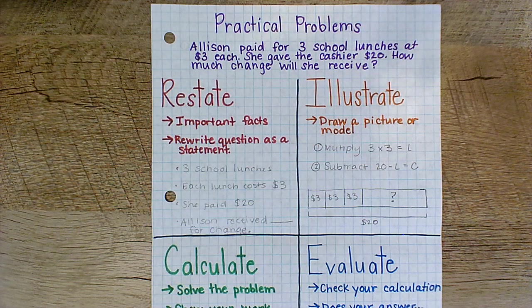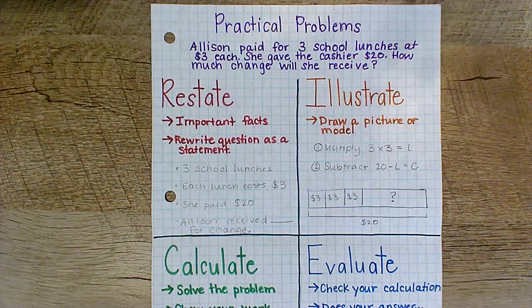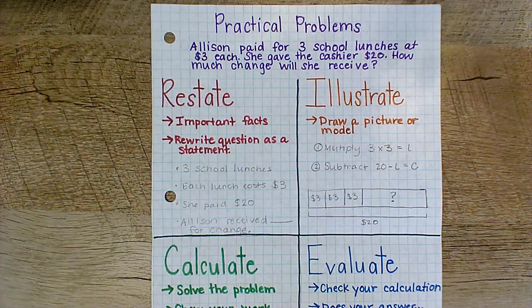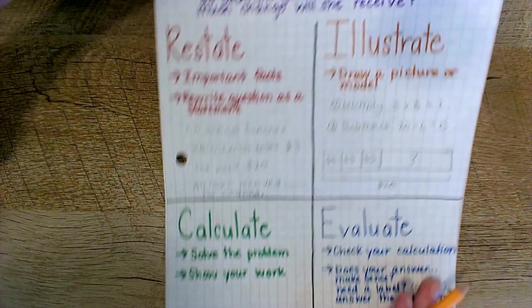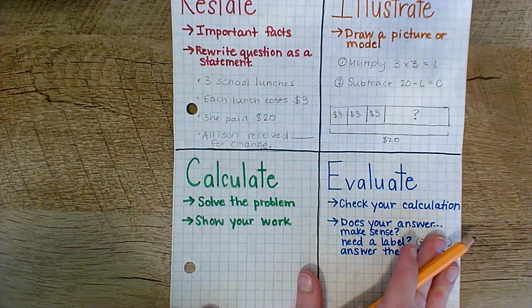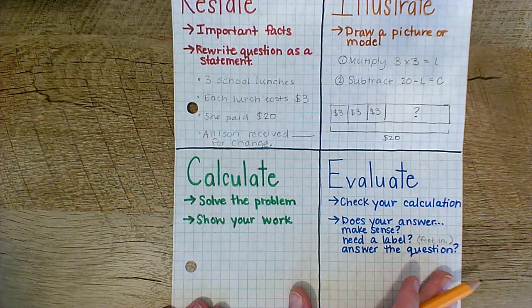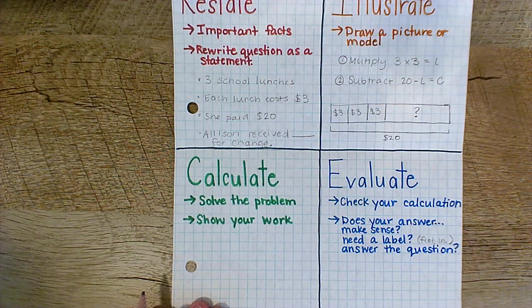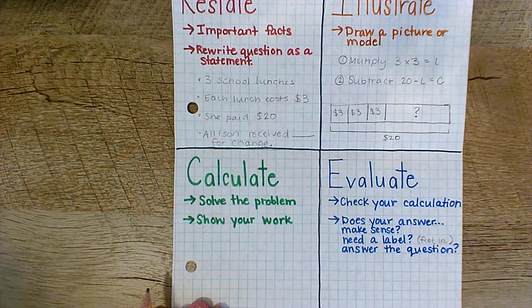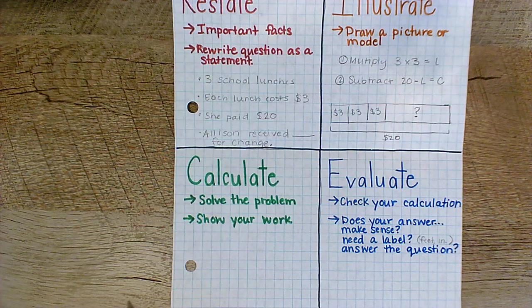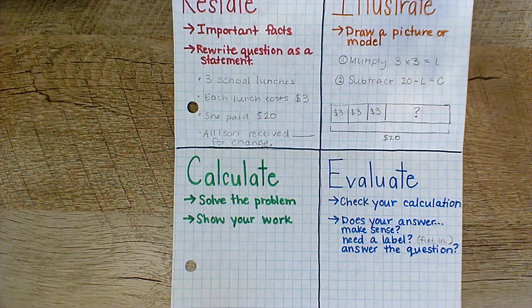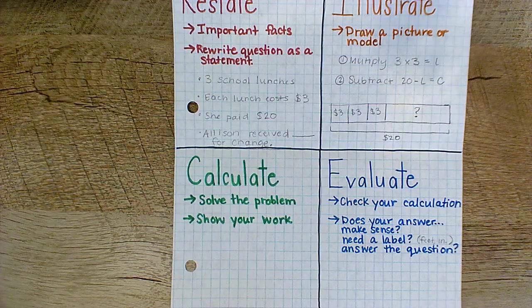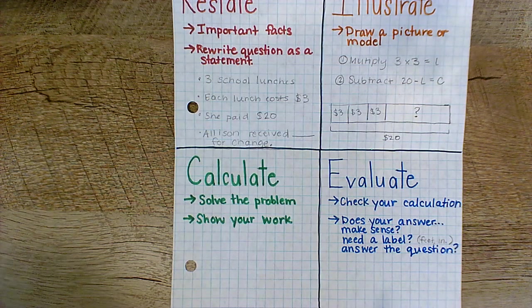Now that we visualize the problem by illustrating a picture and we have identified the steps that we need to do, we're ready to go ahead and solve the problem. So let's look down here at C, calculate. So not only are we solving the problem, but we also need to show our work. I know by fifth grade, many of us are comfortable with trying to do this in our head. But by showing work, when we get to our evaluate, we might find we made a mistake. And our work can show us where that mistake might have happened. So I'm going to show the work for this problem.